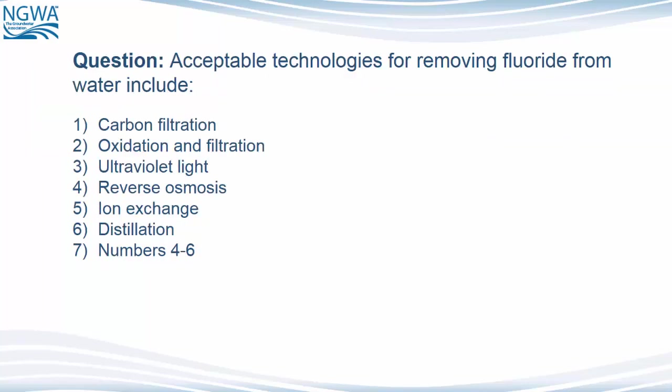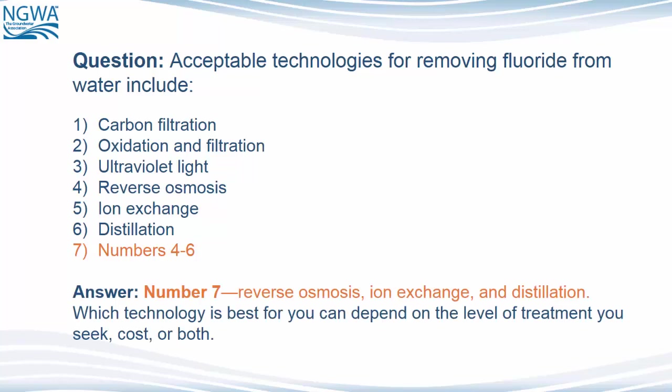Question: Acceptable technologies for removing fluoride from water include: 1. Carbon filtration. 2. Oxidation and filtration. 3. Ultraviolet light. 4. Reverse osmosis. 5. Ion exchange. 6. Distillation. 7. Numbers 4 through 6. The answer is number 7 — reverse osmosis, ion exchange, and distillation. Which technology is best for you can depend on the level of treatment you seek, cost, or both.